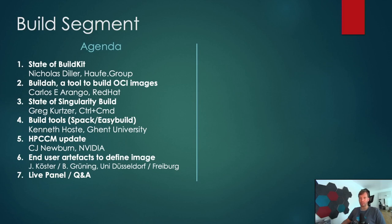After that, we will get some food for thought from Johannes and Bjorn, talking about end-user artifacts to define images — how specific do you need to be, and if you're more specific than someone else, can you share images or how do you need to define those? After that, around an hour in, we will have the live panel and Q&A. Feel free to put all your thoughts in Slack and we can discuss them during the live panel.